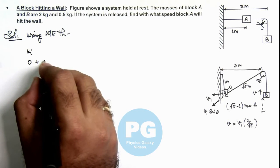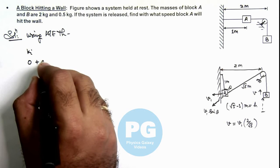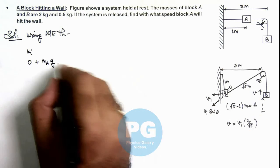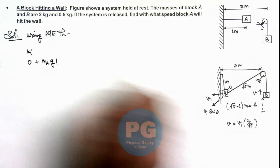So here, the work done by gravity on it is mgh. This is mass of A, g, the depth by which A is fallen is 1 meter.